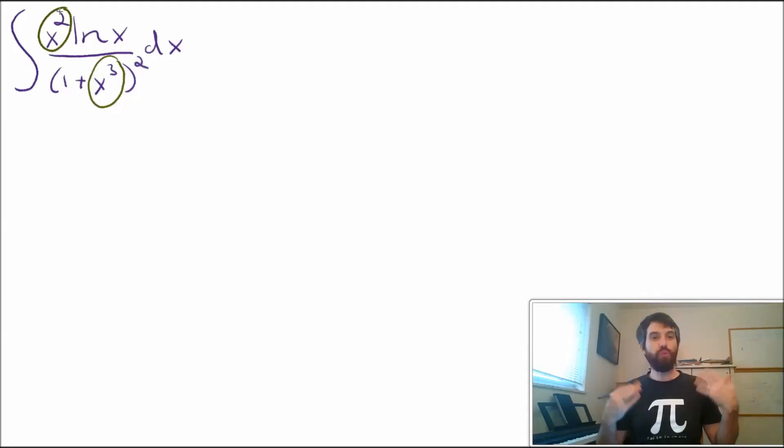And this screams out to me that perhaps I should use either u equals 1 plus x cubed, or u equals x cubed. I don't immediately know which of those two I should use, but I'm tempted towards u equals x cubed, simply because if I do the 1 plus x cubed business, then in my ln of x, when I transfer that into u's, that's going to be a little bit messier.